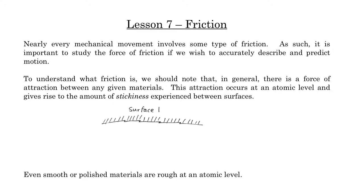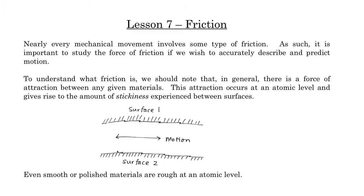Here's surface one, and at an atomic level it's not smooth. Even the most smooth surfaces — even if you polish, polish, polish — when you look at an atomic level, they're still rough. And when these two surfaces move back and forth over each other, all these little ridges catch on each other. They're really positives and negatives at the atomic level, and so at a molecular level there's a lot of stickiness — and this is what friction results from.